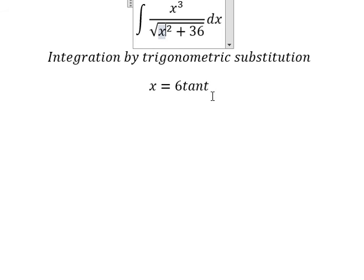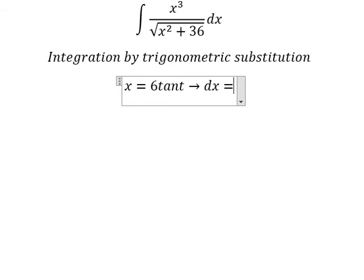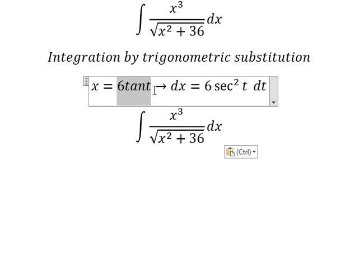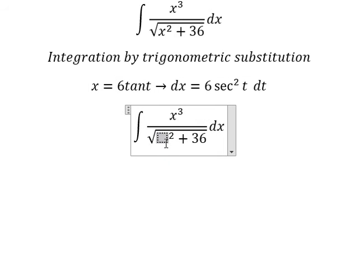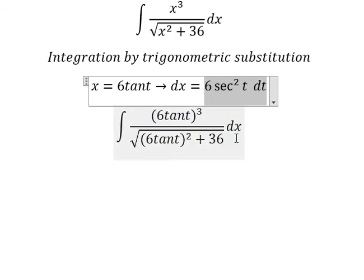Next, for dx, we need to find the first derivative for both sides, and we have 6 secant of t squared dt. I will substitute this in here — we replace dx with this expression.